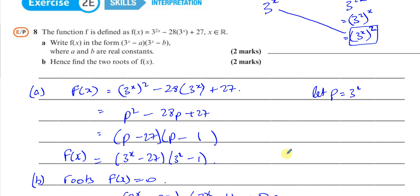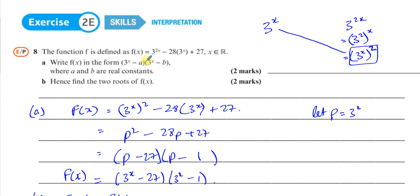This is another disguised quadratic, but one in exponential form. The key idea is that (3^x)² equals 3^(2x) because multiplying the powers gives 3^(2x) — so 3^(2x) can be seen as 3^x all squared. That's the one we need, because once we recognize we have 3^x and (3^x)², it's a quadratic — a disguised quadratic again.